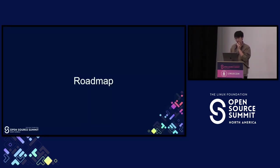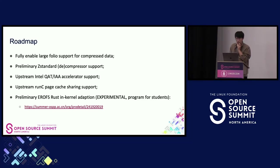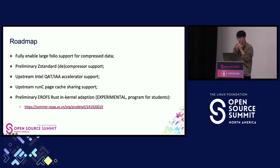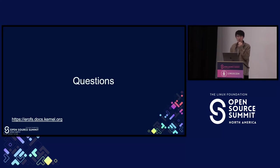So much for the applications — we're going to come to the roadmap of EROFS. In the future, we're going to fully enable large folio support for compressed data, and preliminary zstd decompressor and compressor support is going to be built. Upstream Intel accelerator support is something we're working on, as is upstream RONC page cache sharing support. The preliminary Rust in-kernel adaptation has a group of students working on it, and we're still thinking about how we should progress on this feature. That's all we have to share today — thank you for your time and any questions.